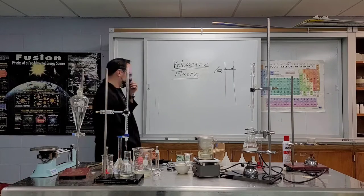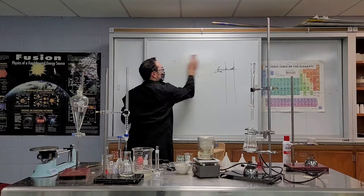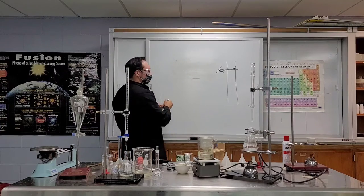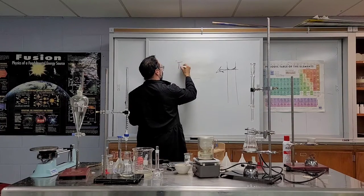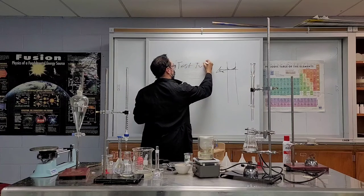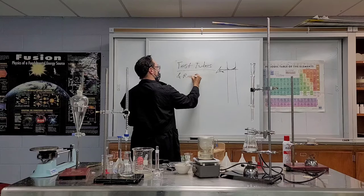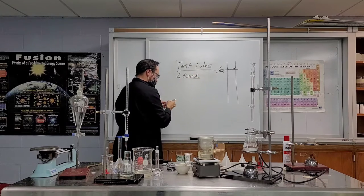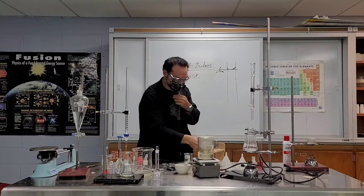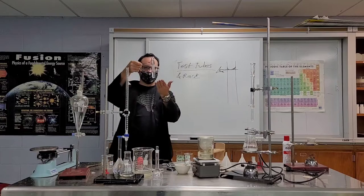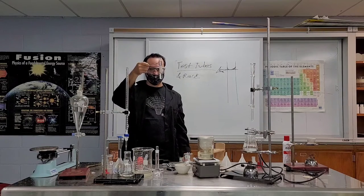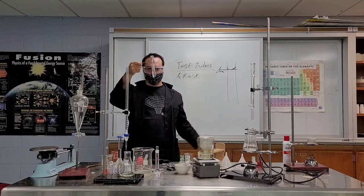Test tubes, this is easy. Test tubes are probably the cheapest thing you got in the lab. Test tubes and the thing you set them in is called a rack. This is pretty easy. It's a tube, put chemicals in there and test them.